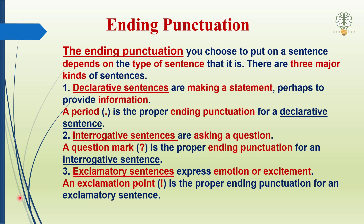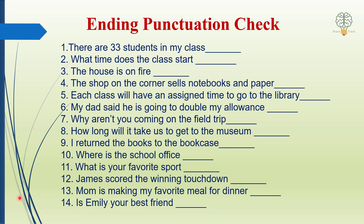So this is the proper ending punctuation for exclamatory sentences. Now we will do an exercise just to check ke koon-koon se signs yahan pe at the end of the sentence hamein lagane chahiye. Yeh bilkul easy si hai, bilkul basic hai. So let's start. First sentence is: there are 33 students in my class. So there is a period at the end. Information provide ki ja rahi hai ke class mein 33 students hain — na koi feelings hain aur na yeh question hai, bilkul just bataya ja raha hai.